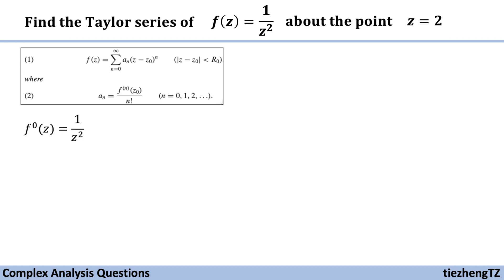Alright, so the 0th derivative is itself 1/z². First derivative is -2/z³. Second derivative is positive 6/z⁴. And then the third derivative is -24/z⁵.